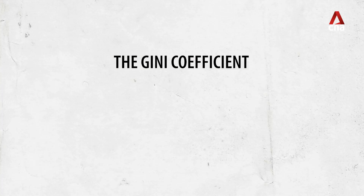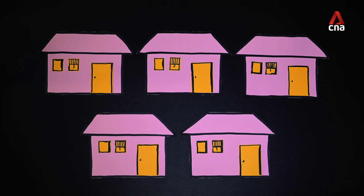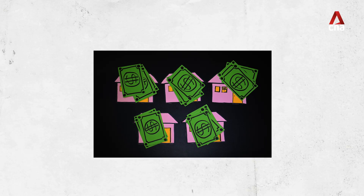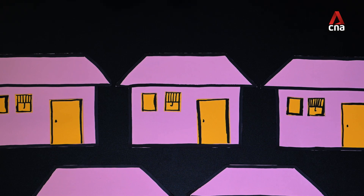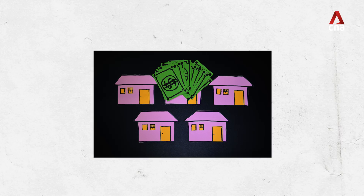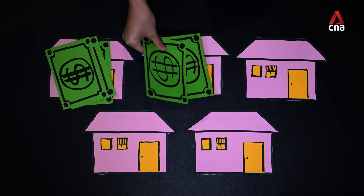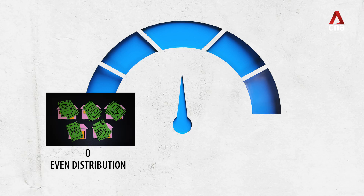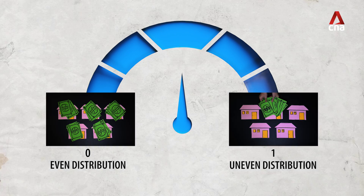The Gini coefficient is a number between zero and one. If everyone in our little town has exactly the same amount of money, this means perfect equality, so the Gini coefficient would be zero. On the other hand, if one family has all the money and everyone else has none, that would mean perfect inequality, and the Gini coefficient would be one. In the real world, this figure lies somewhere in between. The closer to zero, the more equally the money has been distributed; the closer to one, the more unequal it is.